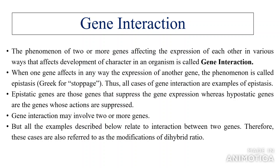Epistatic genes are those genes that suppress gene expression, whereas hypostatic genes are the genes whose actions are suppressed. Gene interaction may involve two or more genes, but all the examples described below relate to interaction between two genes; therefore these cases are also referred to as the modification of dihybrid ratio.